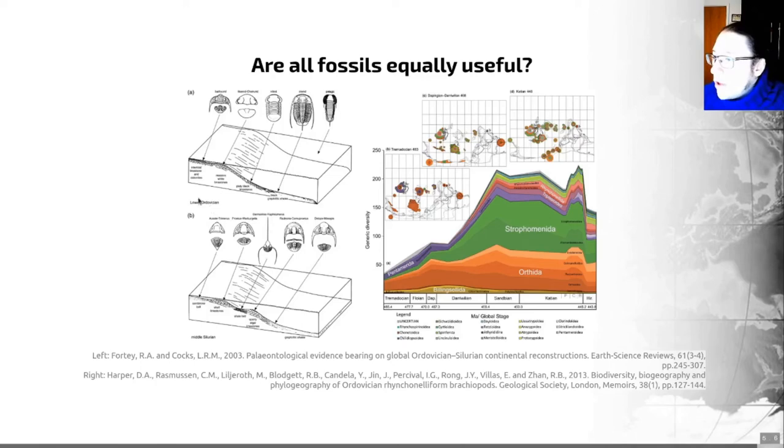And on the right hand side, we can see a series of Ordovician changes in terms of the diversity of different brachiopod groups. As you can see from those, communities change in time as well as space.